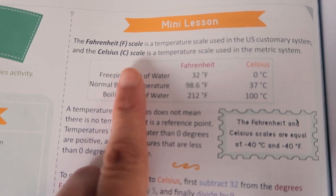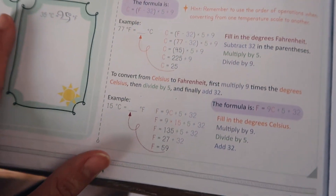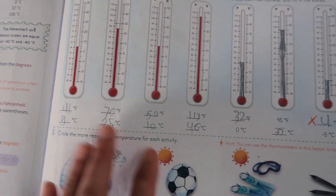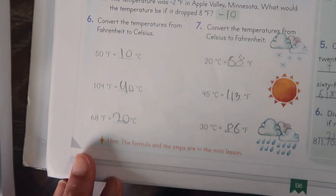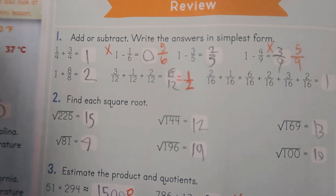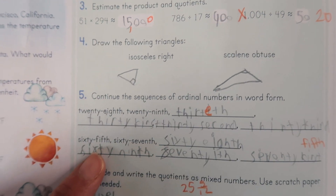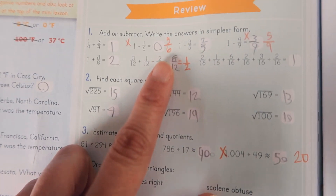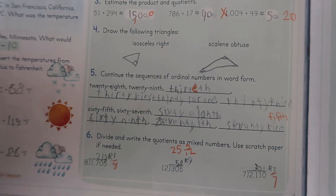Then they do a mini lesson — they can reread it if needed as it reviews what was in the video. After that comes the practice, which covers exactly what they learned in the video. They have quite a bit of practice but not too much. Then at the end of every chapter there's a review of all the different things they've already learned. I go back and correct it from the answer key, and then have my son look over why he missed any problems.